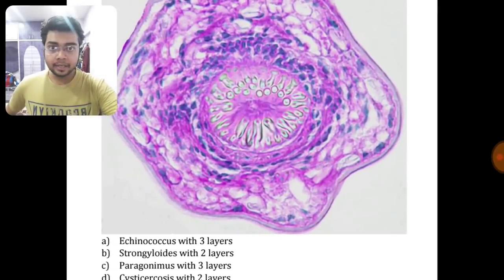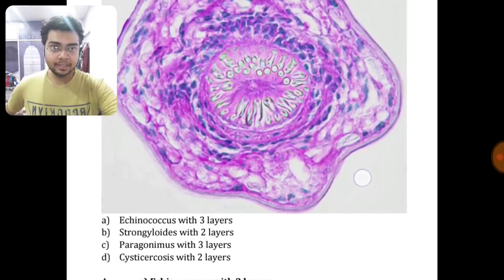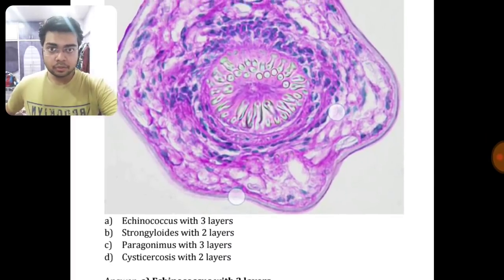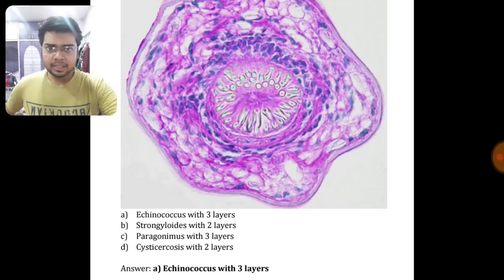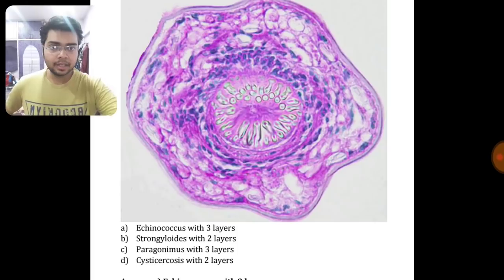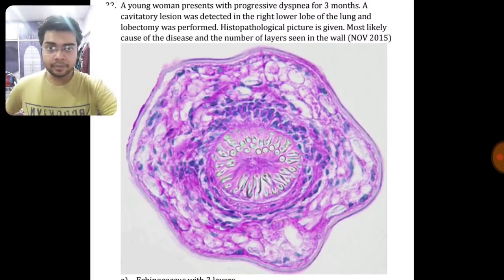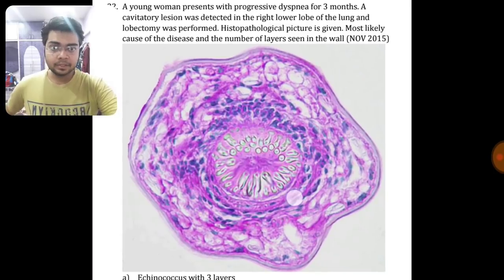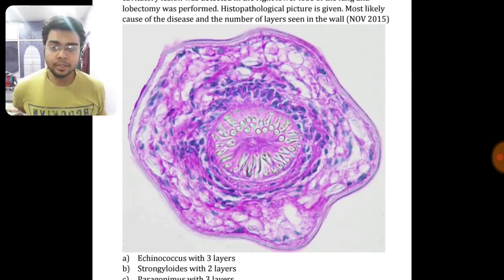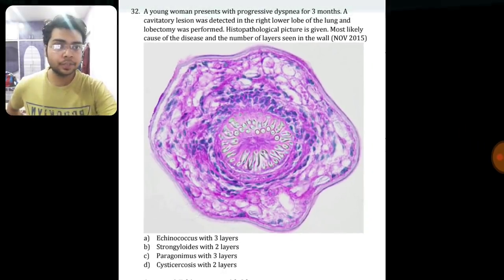The answer here is Echinococcus, which surely has three layers. Paragonimus also resides in the lungs, but how many layers it has we couldn't confirm. However, in a 2015 paper, the answer was Echinococcus with three layers. You can go into the detail of Echinococcus for more knowledge.